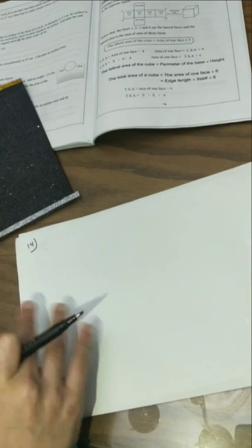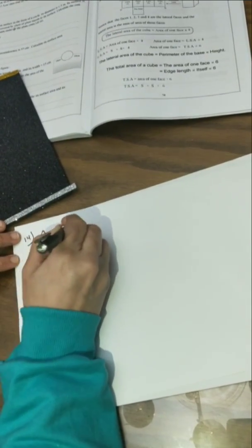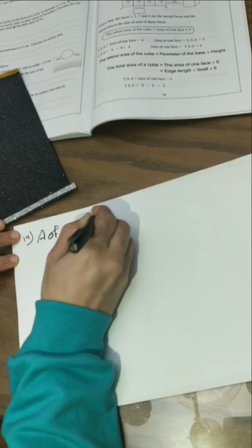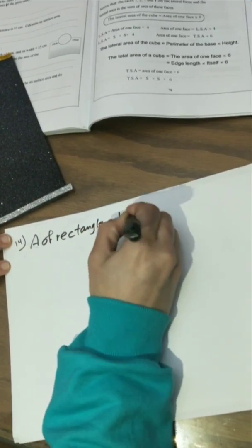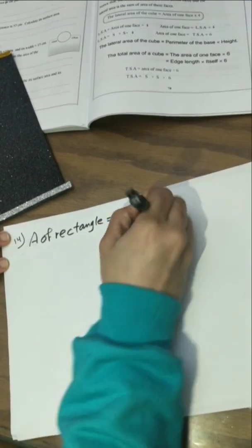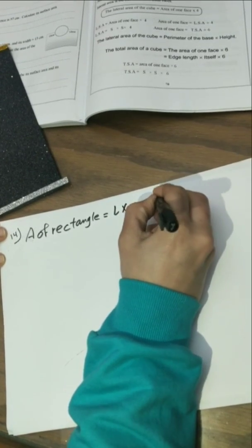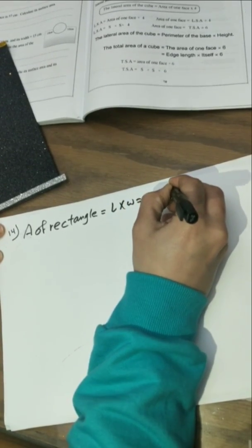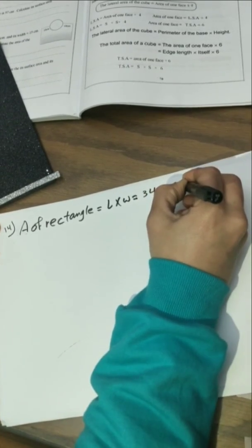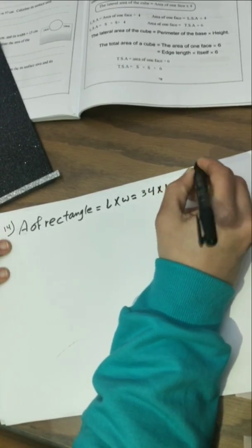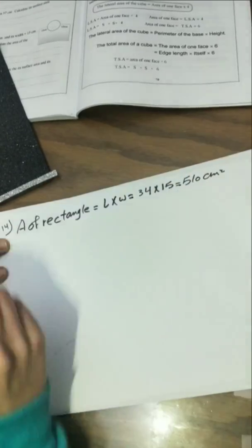Area of rectangle is easy. Area of rectangle equals length times width, equal 34 times 15, which equals 510 cm².